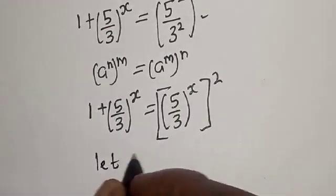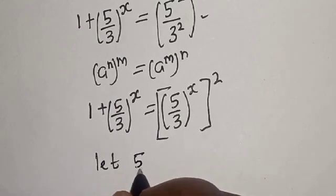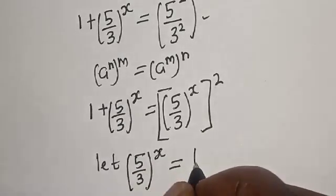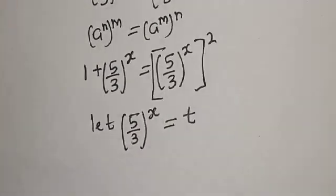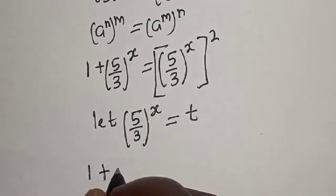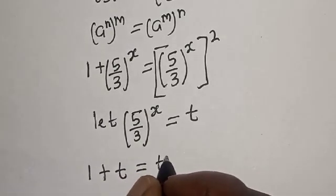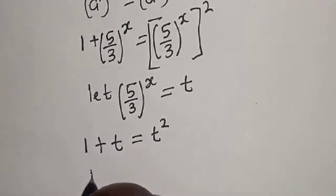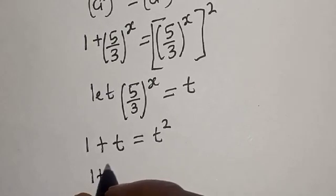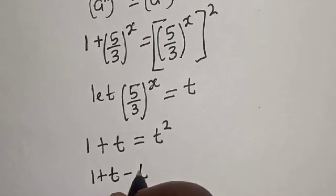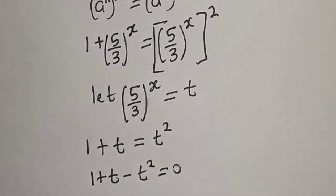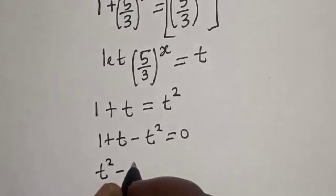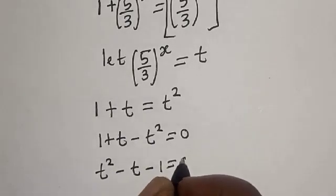Now let (5/3)^s equal t. We have 1 plus t is equal to t squared. Rearranging, we get t squared minus t minus 1 is equal to 0.